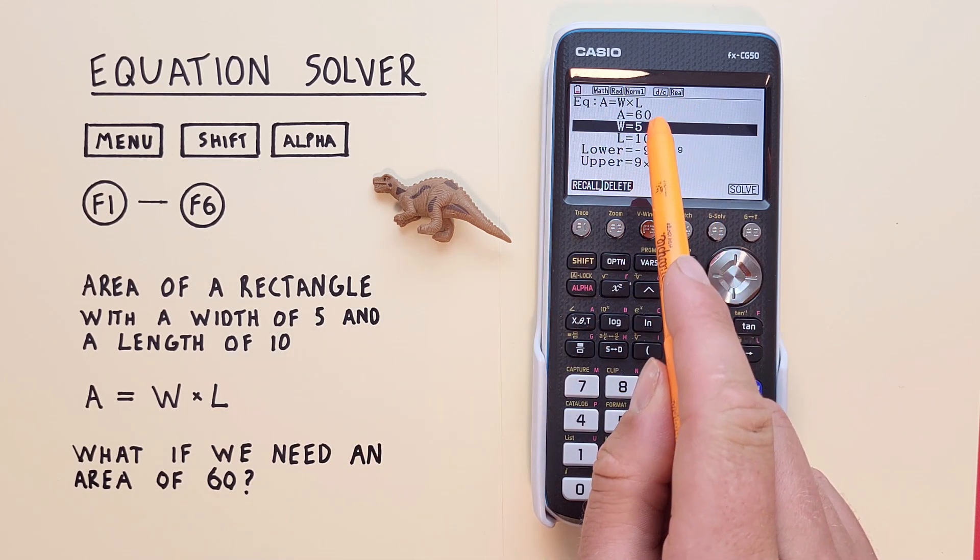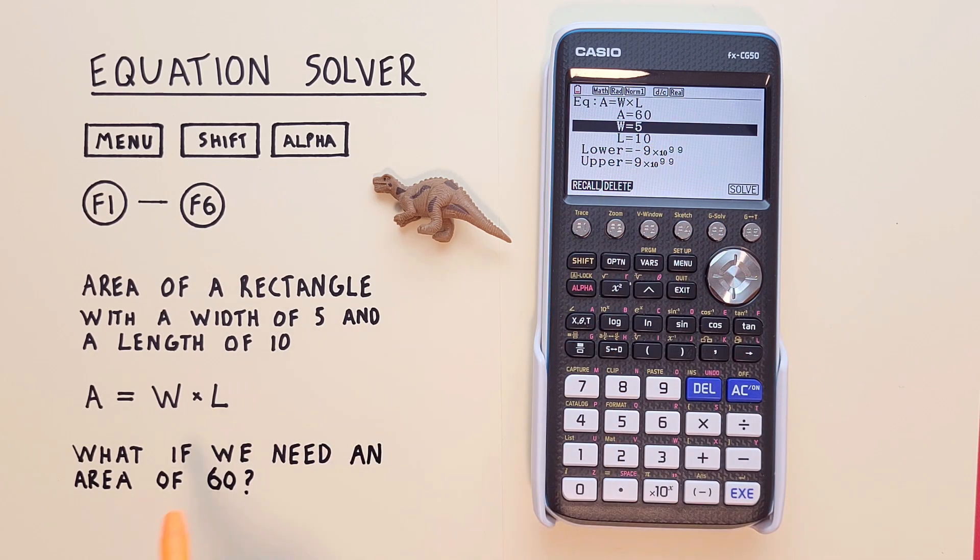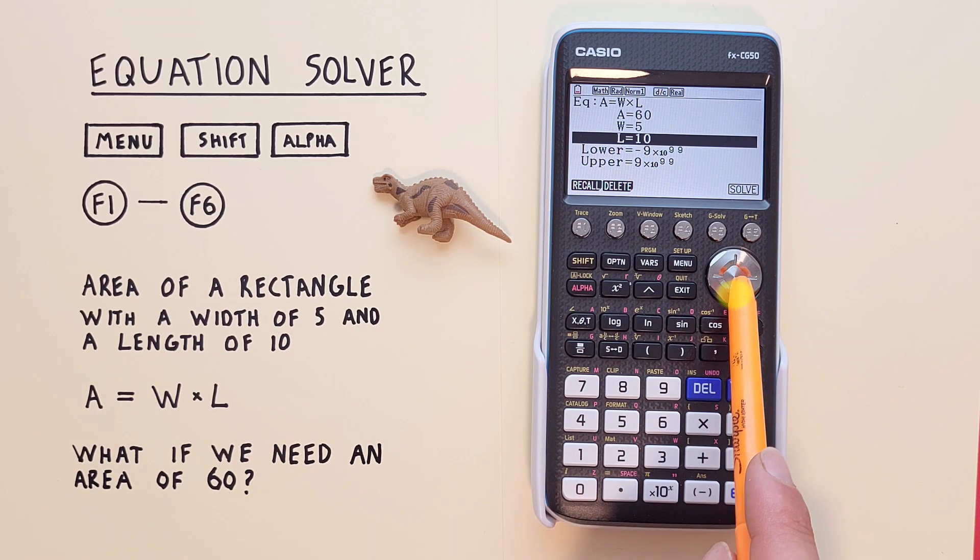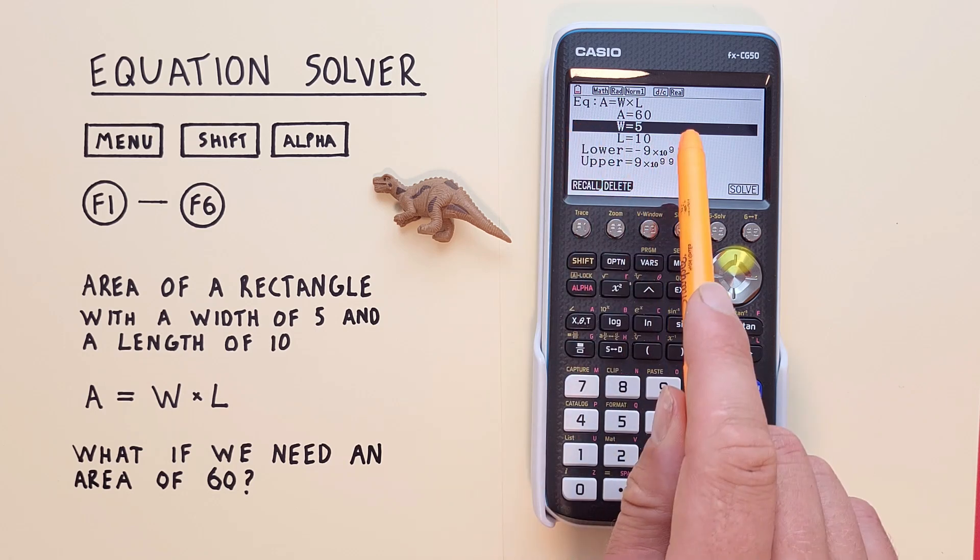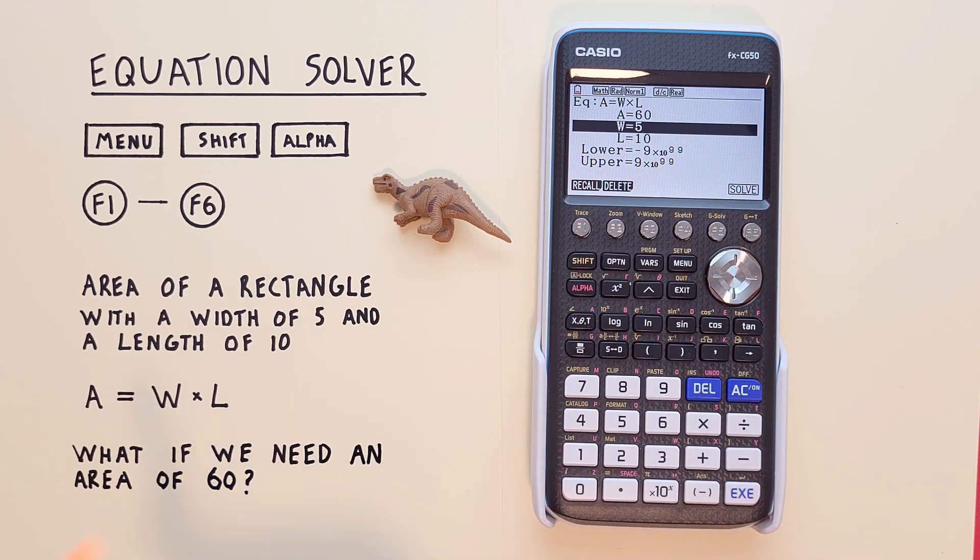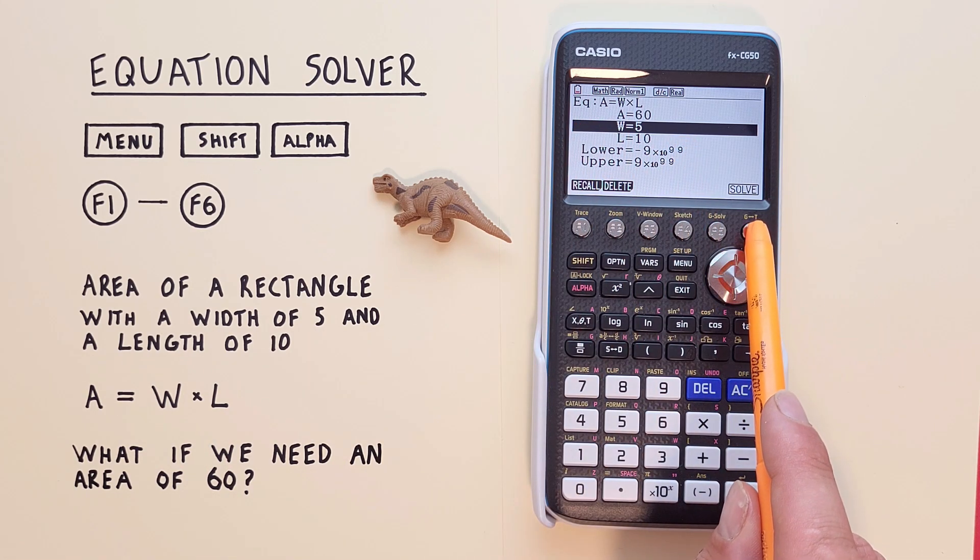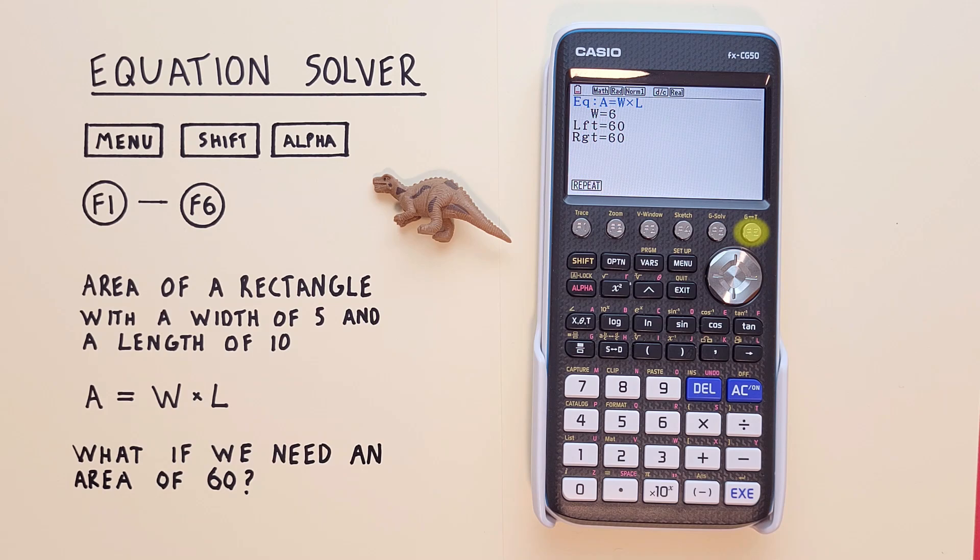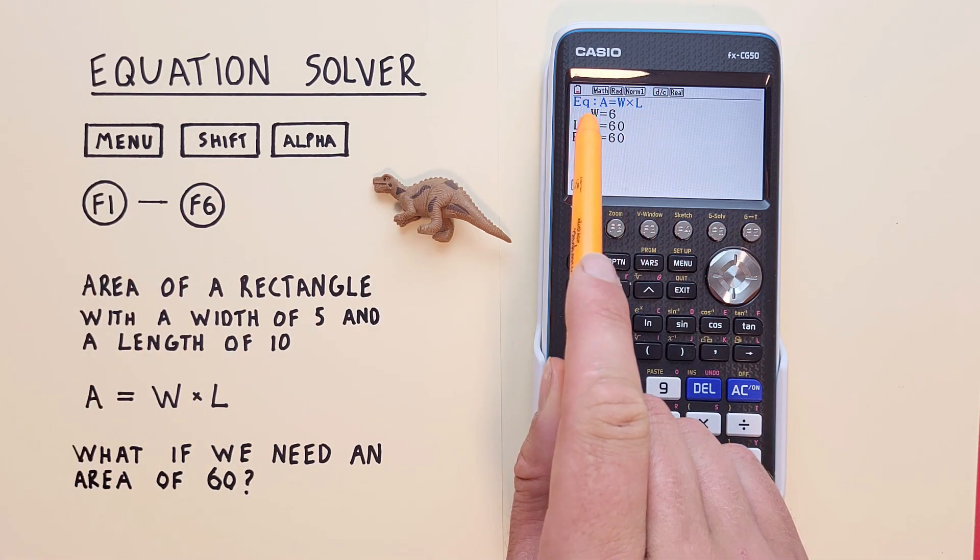And then we need to solve for either our width or our length to get an area of 60. Let's hold the length of 10 and solve for a width. So we highlight that and hit F6 solve.